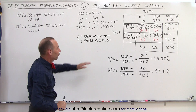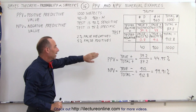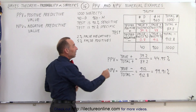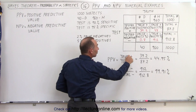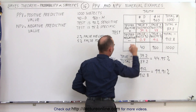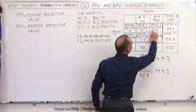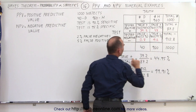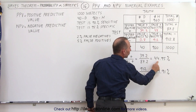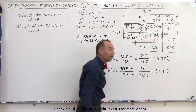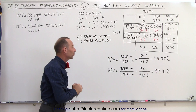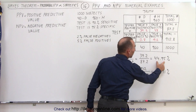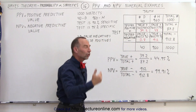Now for the numerical example of the positive predicted value. The positive predicted value is all the true positives — 39.2 — divided by all the total positives, which is the true positives and the false positives combined to be 87.2. This gives a percentage of 44.95%, about 45%, which means that if you tested positive there's a 45% probability that you actually have the condition.